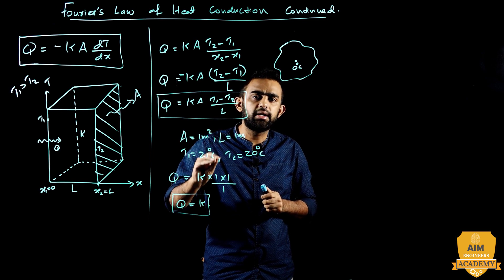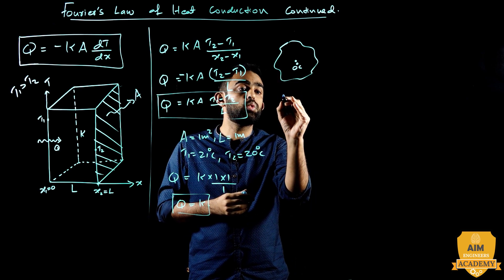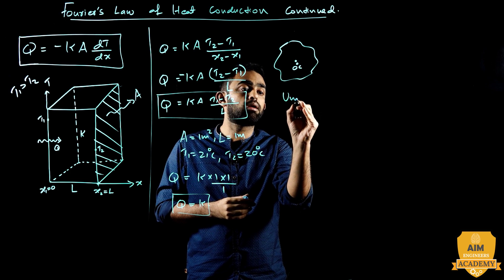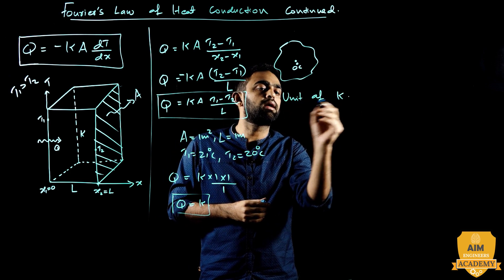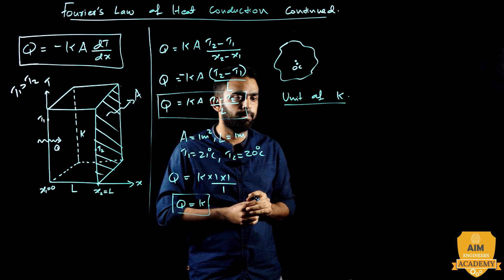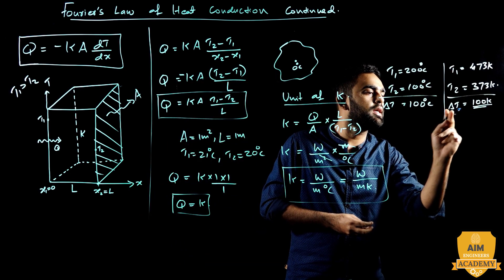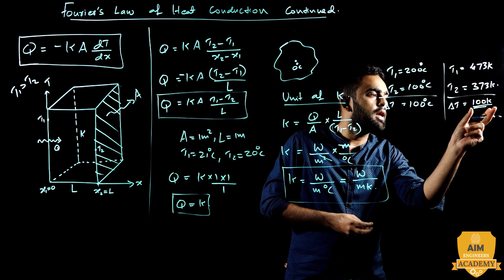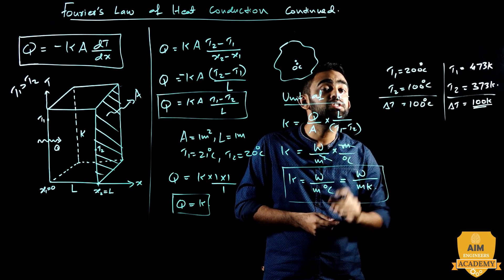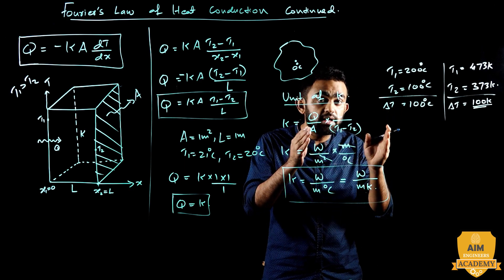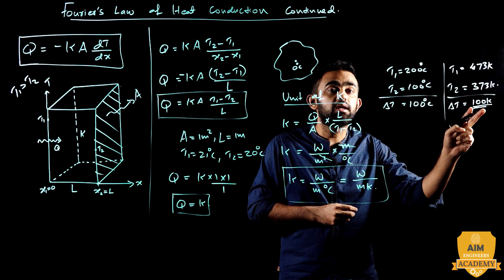Thermal conductivity has units. The unit of thermal conductivity is derived from Fourier's law. Delta T can be expressed in Kelvin or degrees Celsius — both are acceptable for temperature difference.